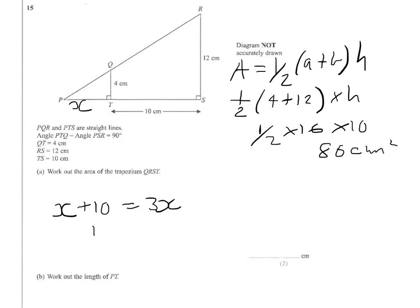So we take the X away from each side, giving me 10 equals 2X, and therefore X equals 5. So the length PT is 5.